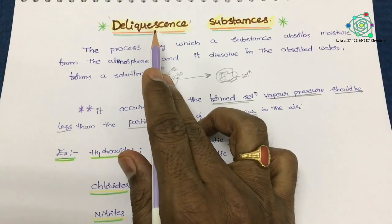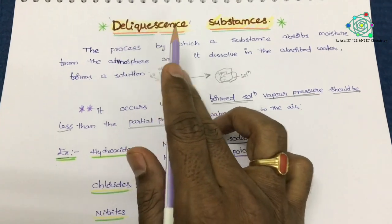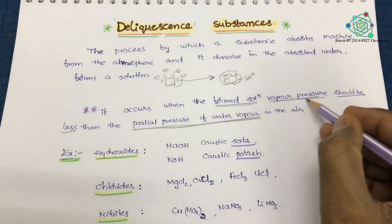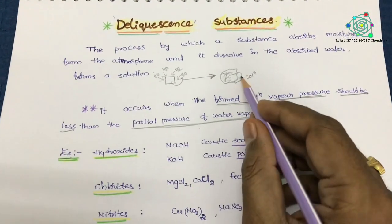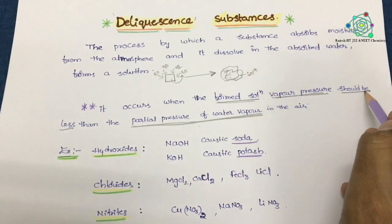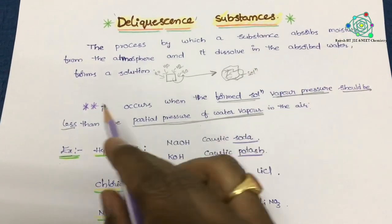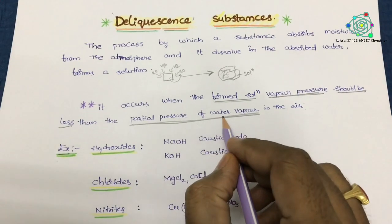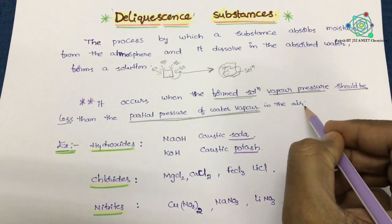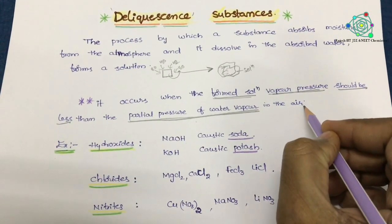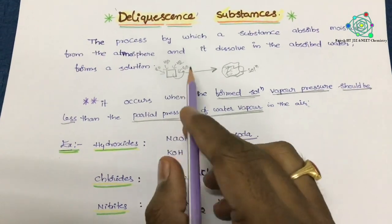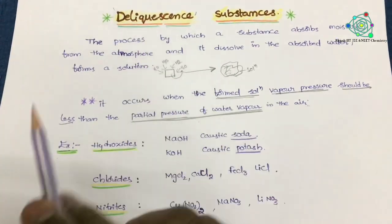Therefore, you can say that a deliquescent substance, by forming a solution, that solution's vapor pressure should be less than the partial pressure of the water in the air. Only in this condition can that substance show deliquescence.